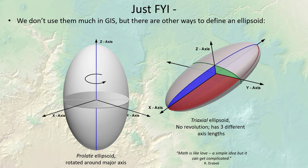Just so you know: a prolate ellipsoid is the same concept as an oblate except it's rotated around the long axis instead of the short one — it looks sort of like a football. And there's also a triaxial ellipsoid, which is defined by three different values: a semi-minor, semi-major, and a third. An ellipsoid is essentially any shape where a cross-section gives you an ellipse. We use the oblate ellipsoid — the ellipse rotated around the semi-minor axis — because it looks like a squashed sphere and is a good model for the shape of the planet.